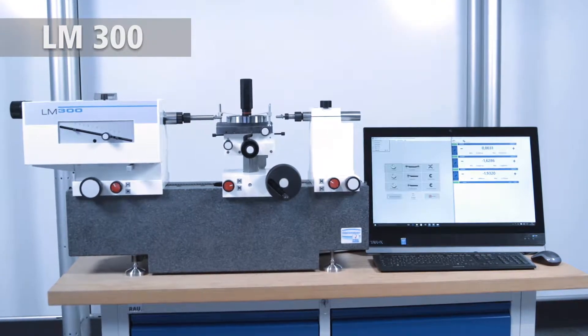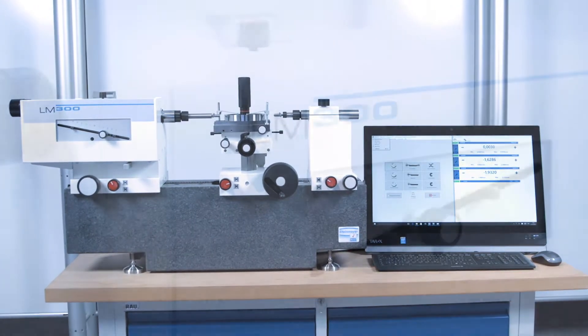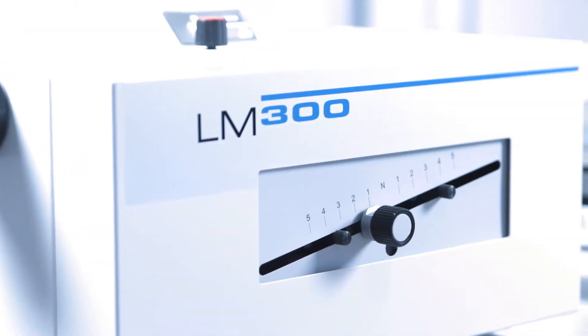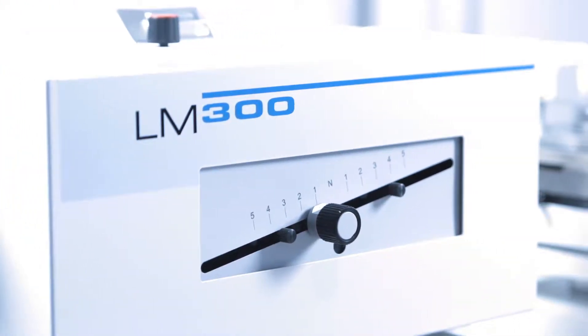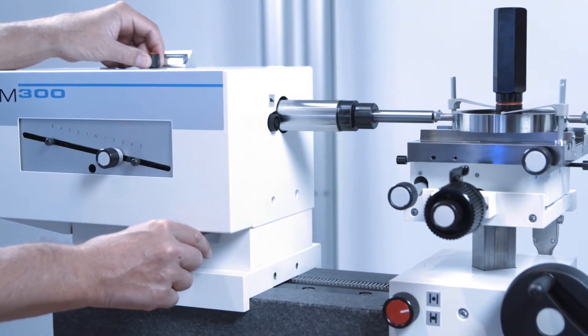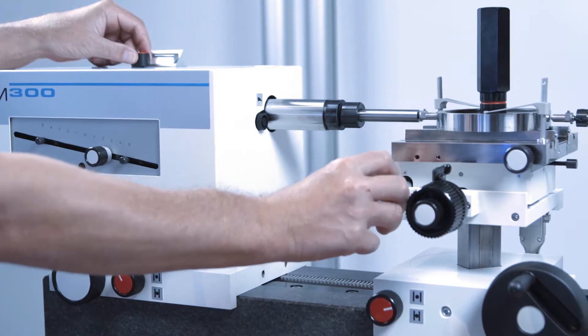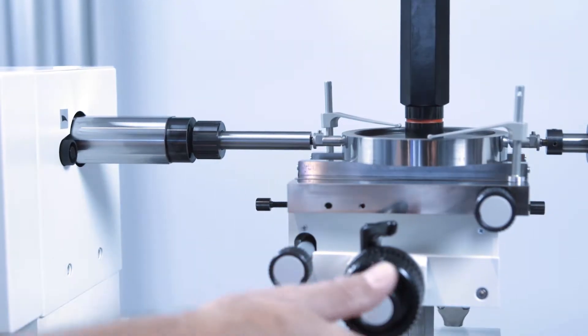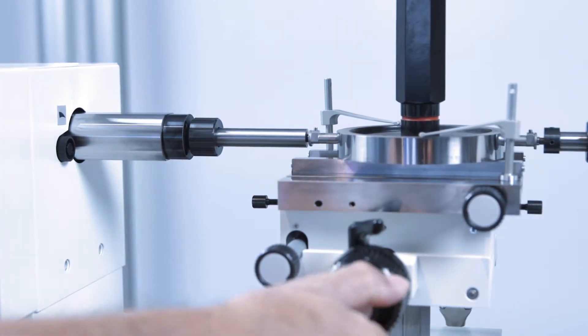Years of experience in a sturdy construction? That's the LM300 length measuring machine from Feinmes Suhl. As a precision measuring device in any calibration laboratory, the LM300 is the economical basis for reliable calibration services.